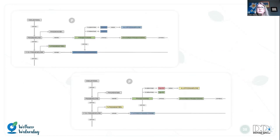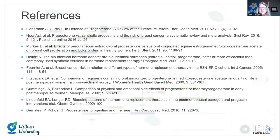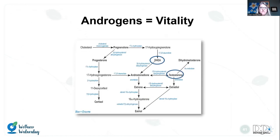The HUMAP can help monitor progesterone response. Looking at a patient before and after oral progesterone supplementation: the progesterone level was within the reference interval, but the metabolites — the 5-alpha and 5-beta-pregnanediol and allopregnanolone — were low. After taking oral progesterone, these values came up quite a bit. So we can monitor that via urinary metabolites.